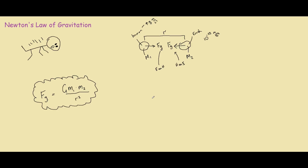How we determine the value of G — this factor — is that in a laboratory, two known masses were used in an experiment where all the knowns were known. They placed one mass here and one mass here and measured the distance between them. In the laboratory, the forces were measured on each other. But a big problem with this experiment is that the forces on each other are extremely small because the masses are extremely small.